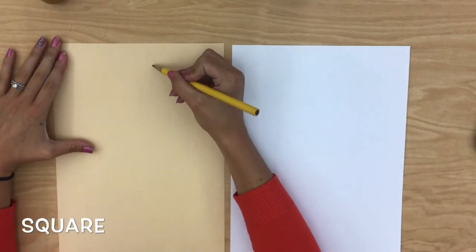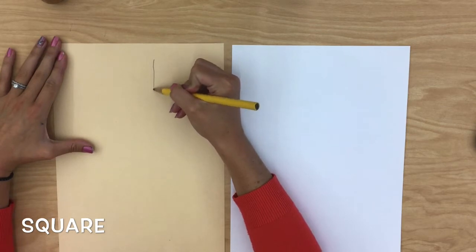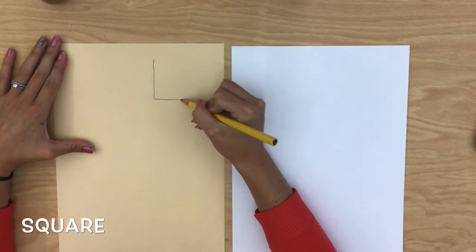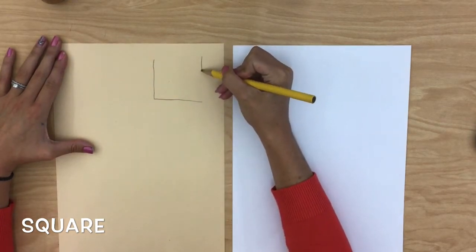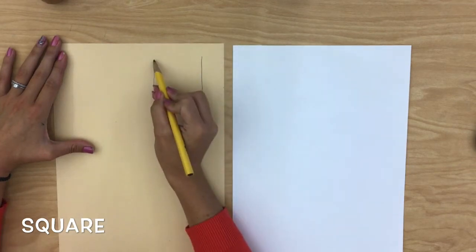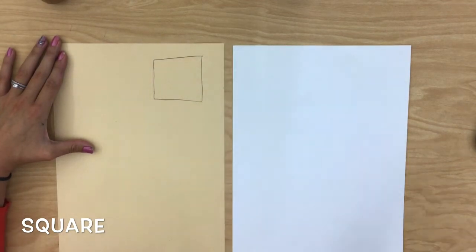All right my kindergarten friends, we're going to get started by talking about some geometric shapes. The first shape that we're going to talk about is a square. A square has four straight sides and a square looks like this.